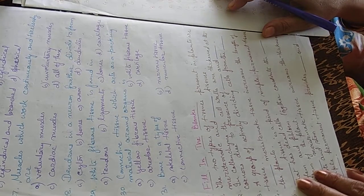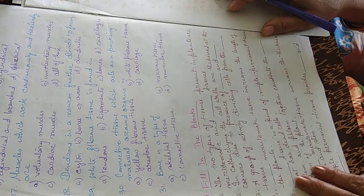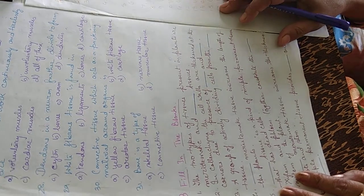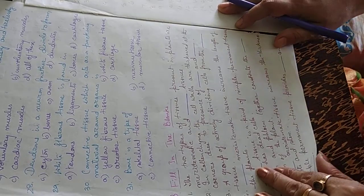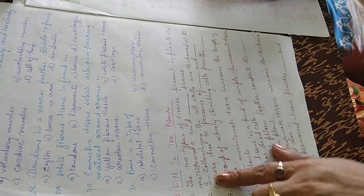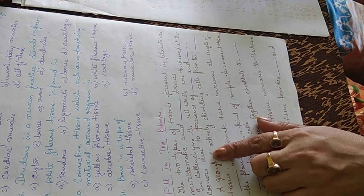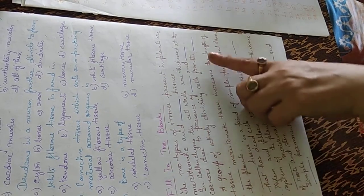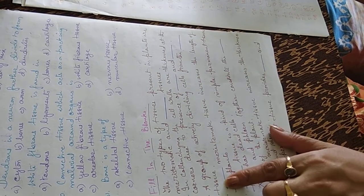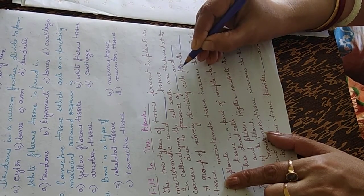Thirty-first question: bone is a type of skeletal tissue, nervous tissue, connective tissue, or muscular tissue. The answer is skeletal tissue. Now the fill in the blanks: the two types of tissues present in plants are meristematic and permanent tissues. In colenchyma, the cell walls are thickened at the corners due to the presence of cellulose and pectin.